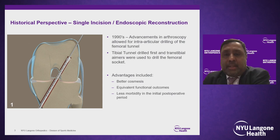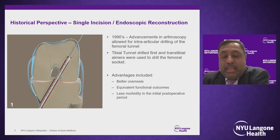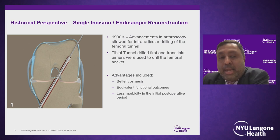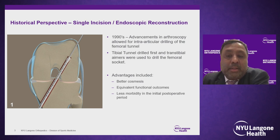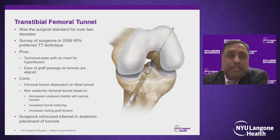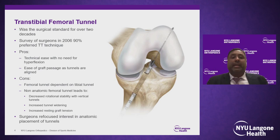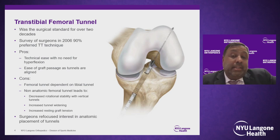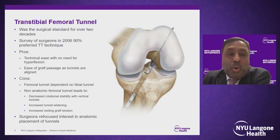As technology advanced in the 1990s, we moved to all-intra-articular drilling of the femoral tunnel. This technique called for the tibial tunnel to be drilled first, and then transtibial aimers were used to drill the femoral socket. This had proposed advantages of better cosmesis with equivalent function and less morbidity in the initial postoperative period. The transtibial technique was the surgical standard for over two decades; by 2006, over 90% of surgeons were using it. The advantages were technical ease, no need to hyperflex the knee, and collinear isometric tunnel drilling.